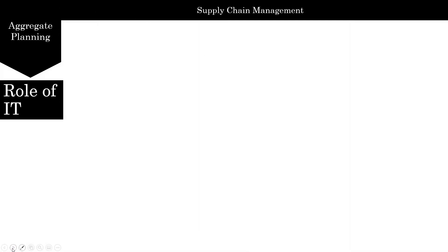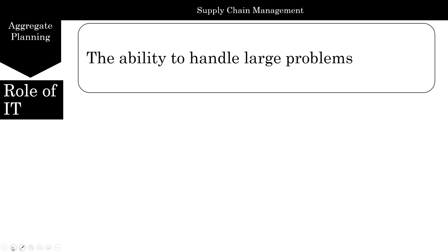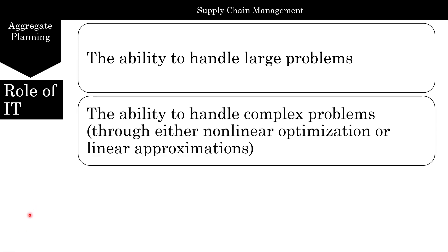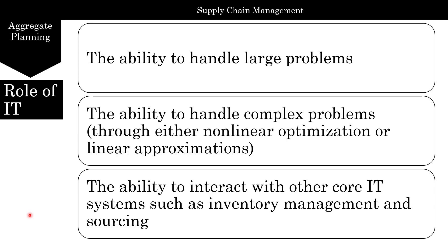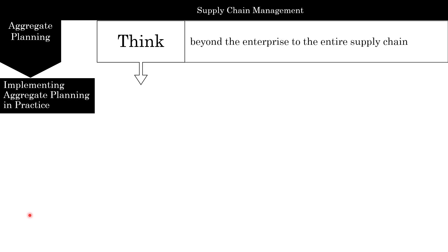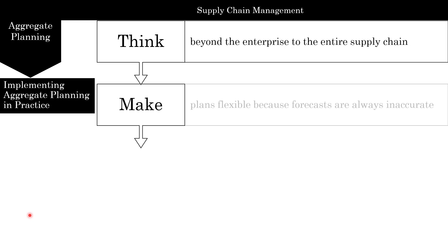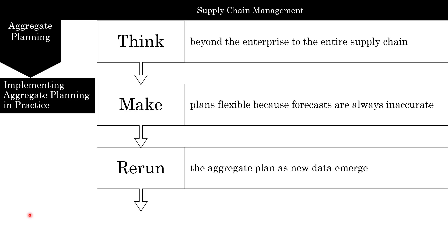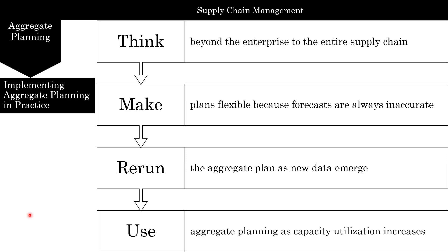Before we finish aggregate plan, let's talk a little bit about the role of information technology. Information technology allows you to handle large and complex problems through either non-linear optimization or linear approximation. This ability to interact with other core IT systems such as inventory management and sourcing becomes very critical when doing an aggregate plan — without that, it would be difficult to do aggregate plans. In real practice: you've got to think beyond the enterprise to the entire supply chain, make flexible plans because forecasts are always inaccurate, and update or rerun the aggregate plan as new data emerges. Finally, use aggregate plan as capacity utilization increases.